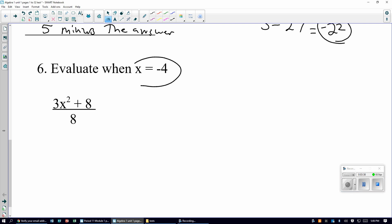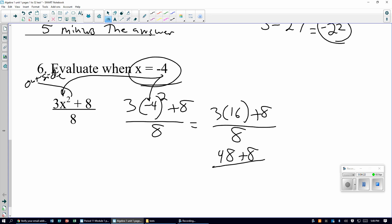Evaluate this one when x equals negative 4. You put a negative 4 in there. I know exactly why I said negative 4. Because remember, when you have a negative number, always put it in parentheses. The exponent goes outside. 3 times 16 plus 8 all over 8. 56 over 8 is 7. Make sure if you have any questions, ask me in class.